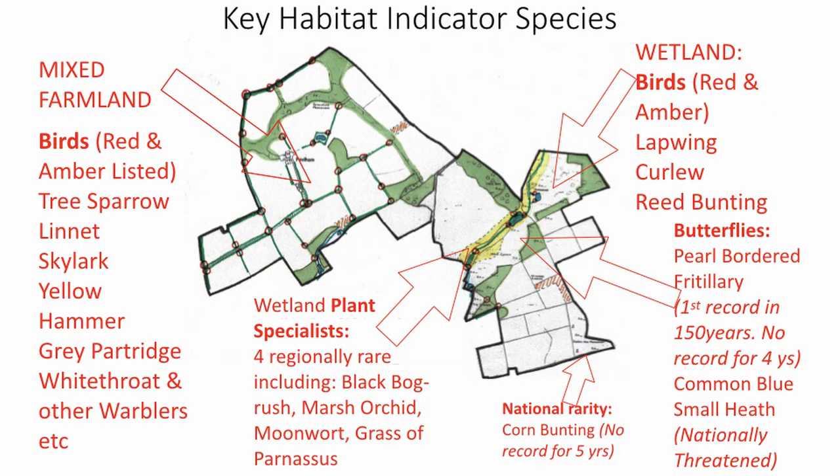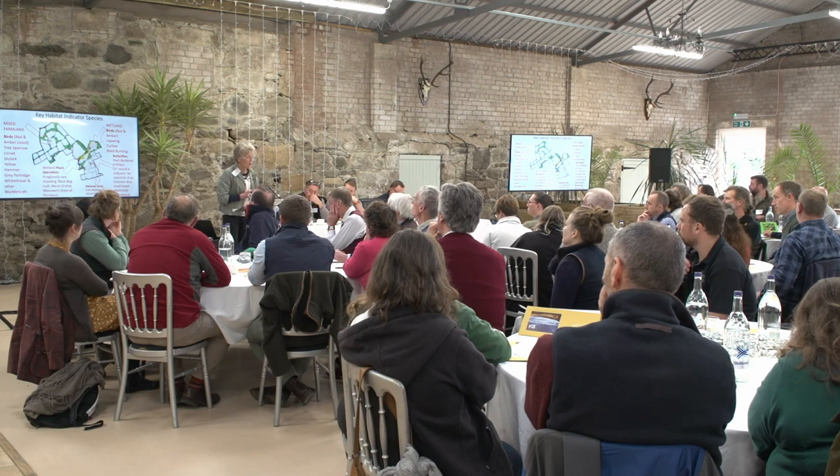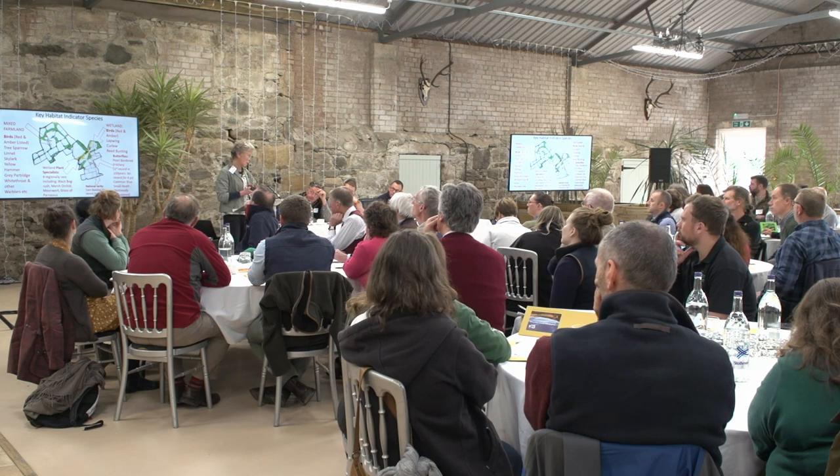We've got some key habitat indicator species. For mixed farmland, we've got RSPB red and amber listed tree sparrow, linnet, skylark, yellow hammer, grey partridge, etc. We've maintained the wetland and increased the area of wetland specialist species for the biodiversity hotspot, including four regionally rare plants, and wetland red and amber species. Butterflies: pearl-bordered fritillary was considered extinct in Berwickshire and was discovered on the farm for the first time in 150 years — unfortunately it hasn't been seen for four years. We've had corn bunting breeding on the edge of the farm, but it hasn't been seen for five years, though there are probably broader influences affecting that. We've managed to capture indicator species which shows that what we're doing is actually working.